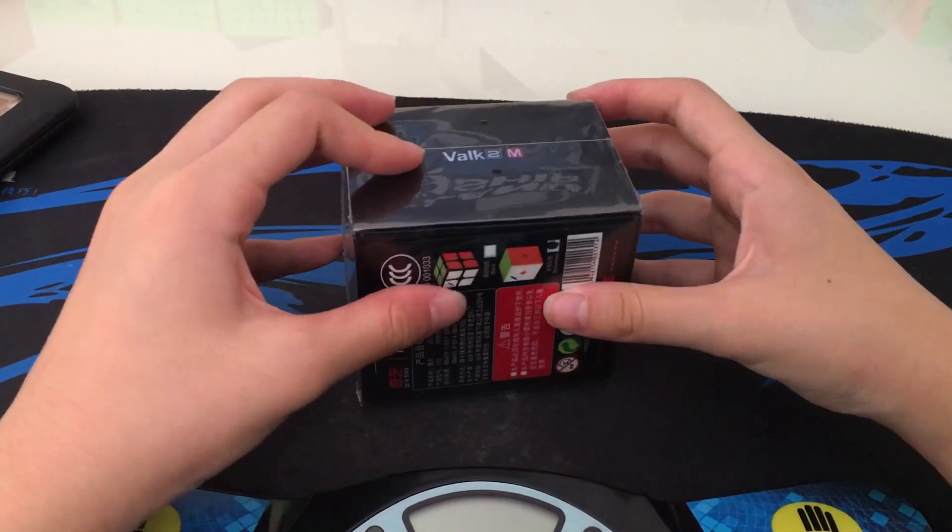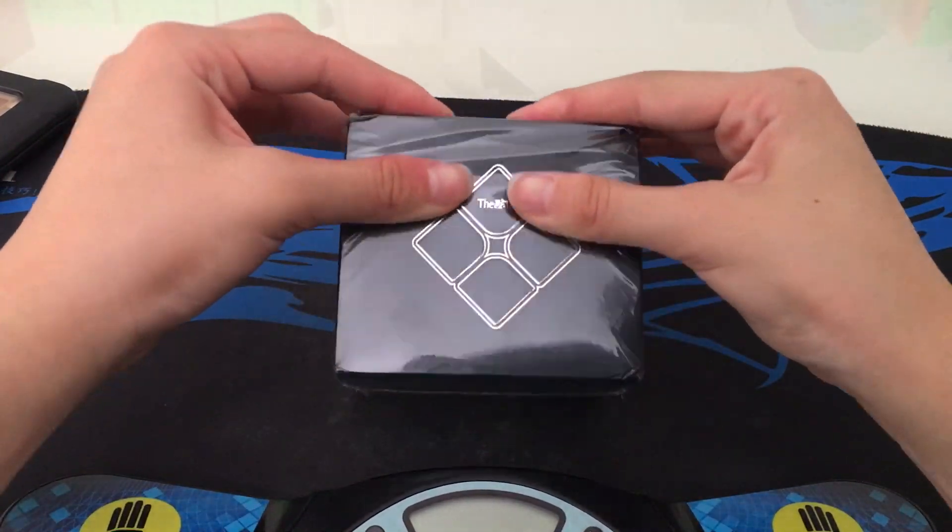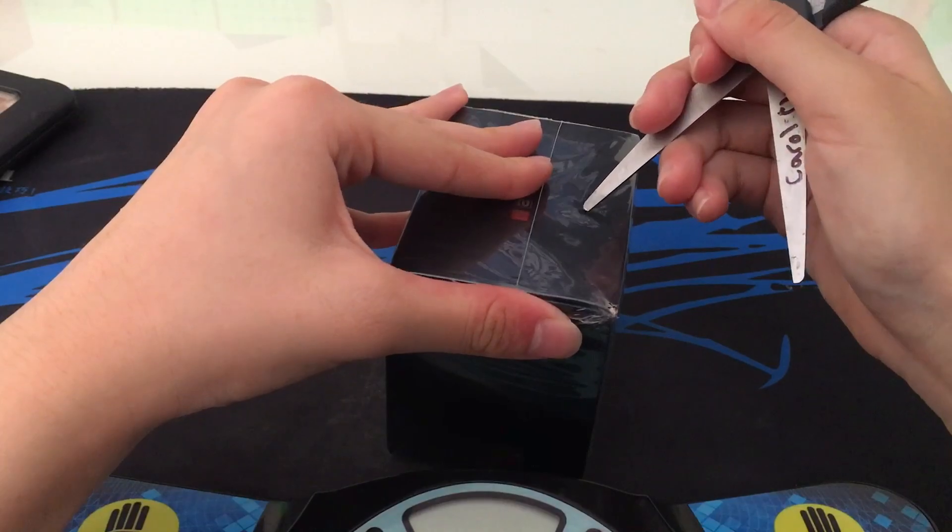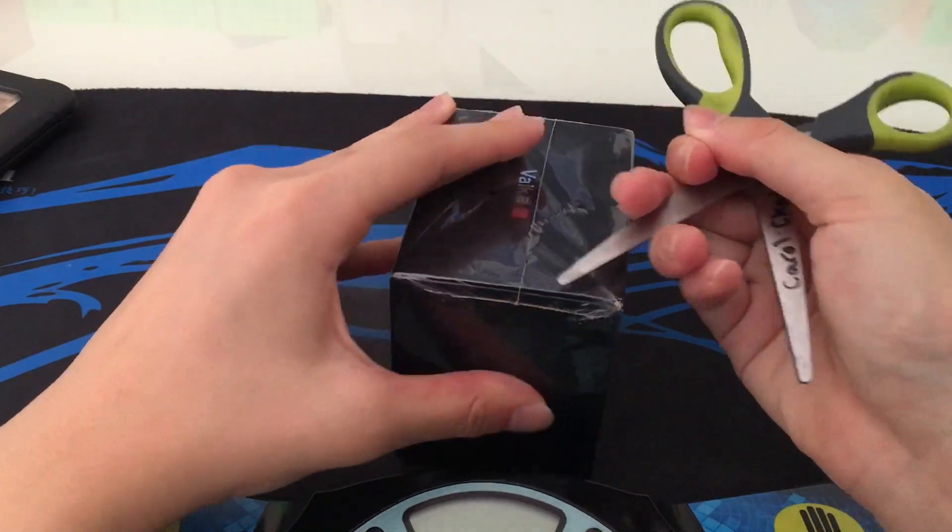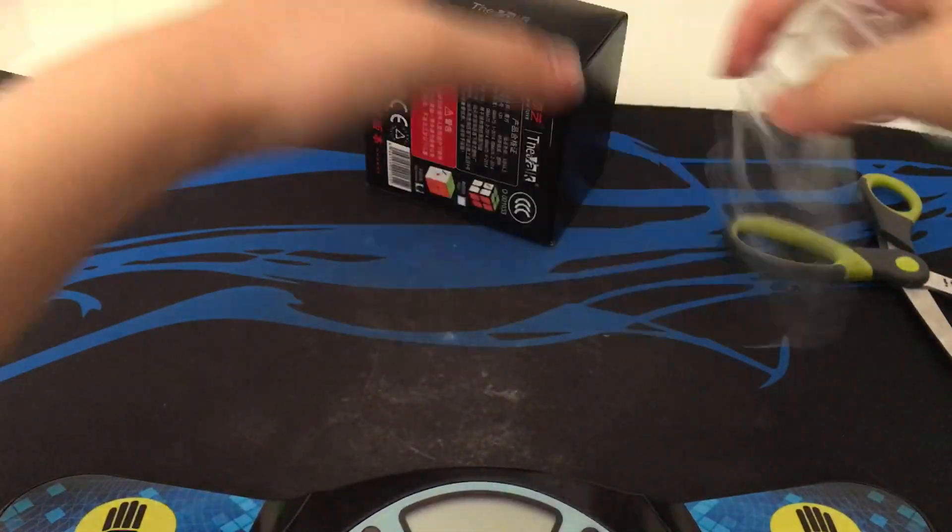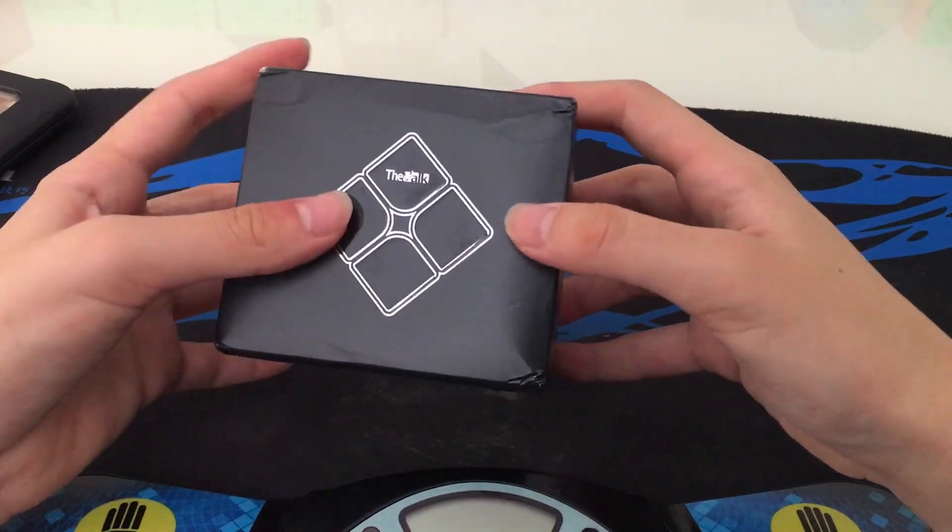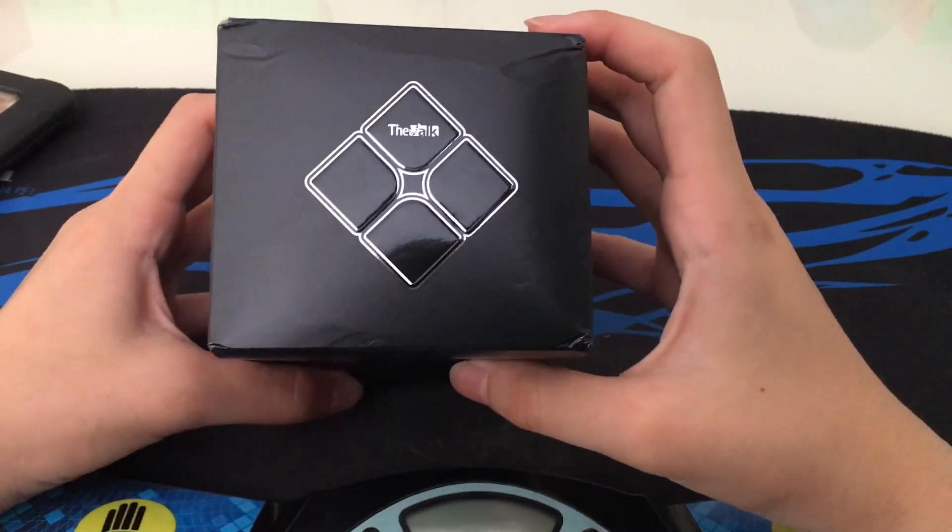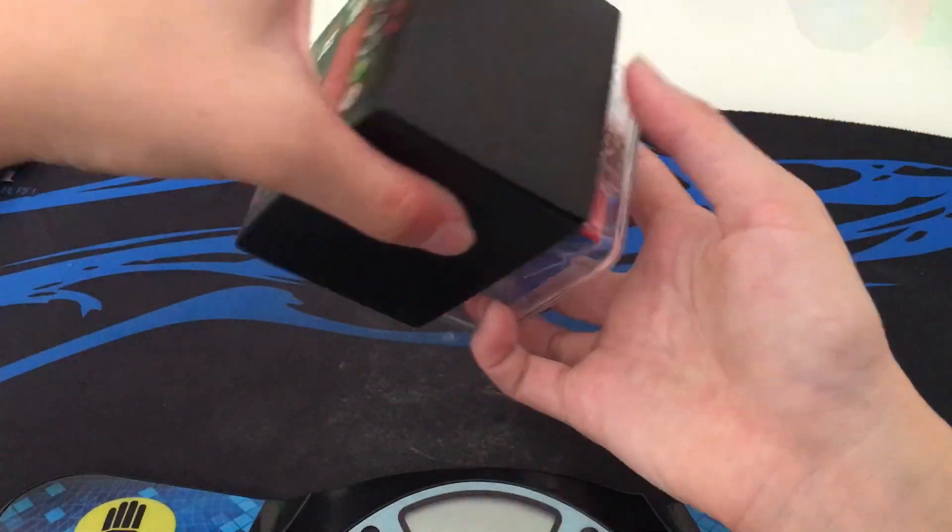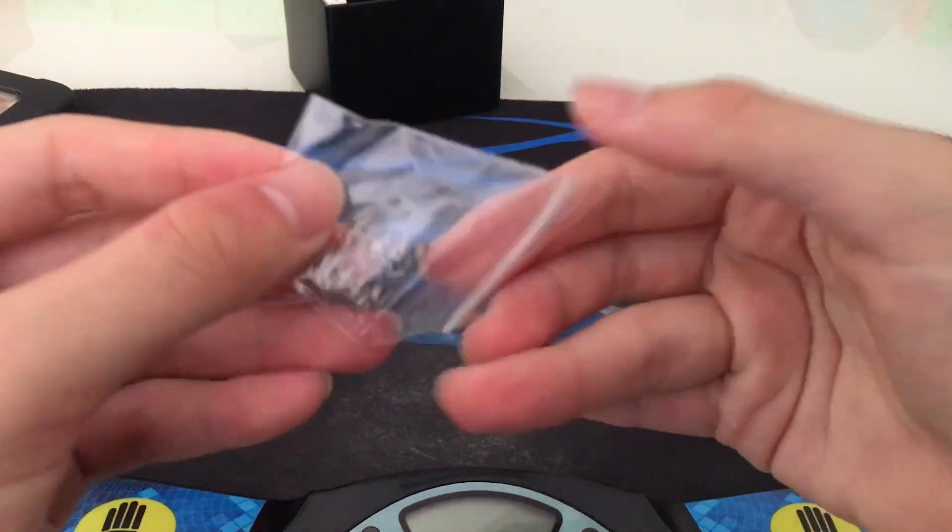So this is the Valk 2M, currently not available at speedcube.co.nz. Rather, I got it from AliExpress. Let's try to open this. That box, international shipping does not do well with Valk boxes. You know, I heard this was going out of manufacture, so I wanted to get it while I could still get it. Oh, same design box, springs, quite a heavy box.